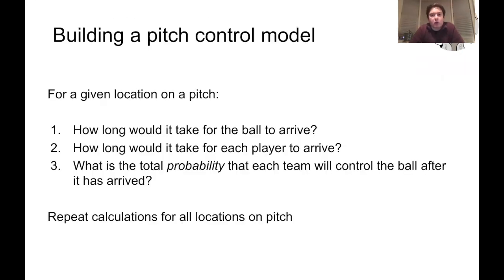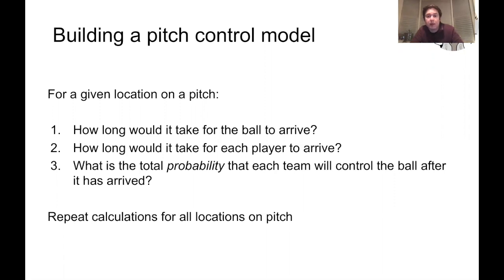If we want to build a pitch control model, there are essentially three things we need to calculate. For a given location on the pitch, we need to calculate how long it would take for the ball to arrive at that location from its current position. We then need to calculate how long it might take for every player on the field to arrive at that location. And finally we need to calculate the total probability that each team or individual players will control the ball. To calculate a full pitch control surface, we repeat these calculations for all locations on the pitch.